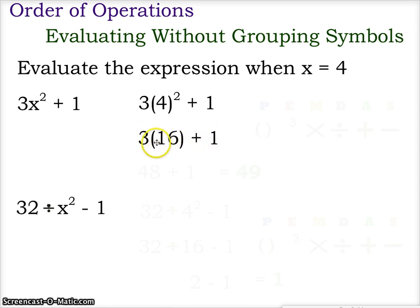Now working left to right, we do multiplication and division before we do addition and subtraction. So 3 times 16 gives us 48 plus 1, and 48 plus 1 now gives us a sum of 49. So exponents first, followed by multiplication, then addition.